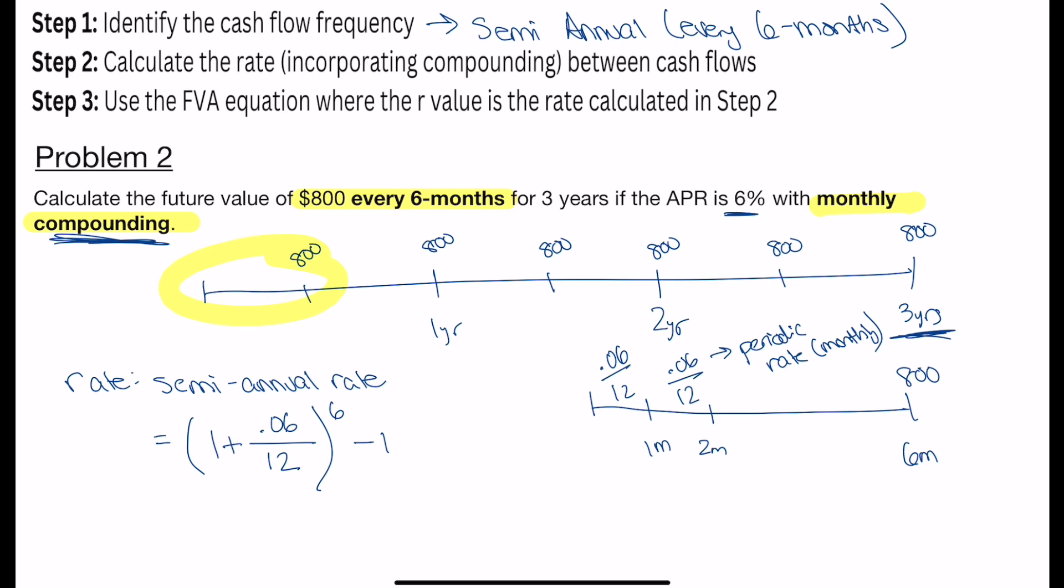So instead of being an effective annual rate, I would think of an effective semi-annual rate. When I solve this out, I end up with 0.030378. And now I can use this rate. I know my cash flow already. And I know the number of times my cash flow occurs within that future value equation.